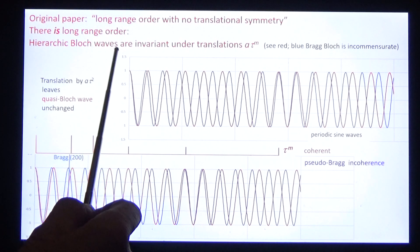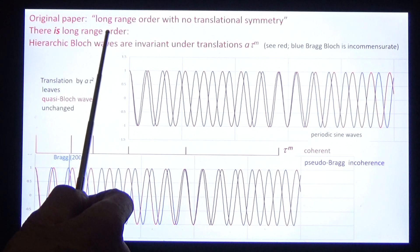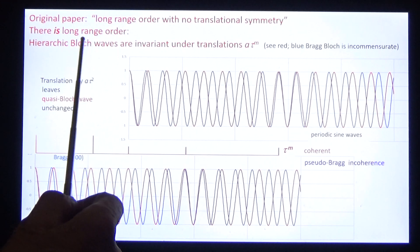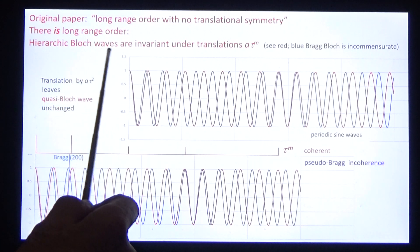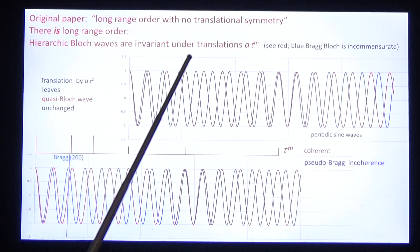So is there long-range order? Yes, of course. That's evident in the diffraction. And is there no translational symmetry? On the contrary, hierarchic Bloch waves are invariant under all translations A to the M. The translational symmetry is hierarchic.